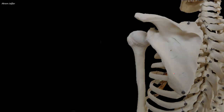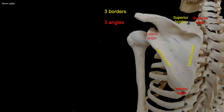The scapula has three borders — medial, lateral, and superior — and three angles: superior, inferior, and lateral. When the scapular body is in the anatomical position, as shown here, the thin medial border of the scapula runs parallel and approximately 5 cm lateral to the spinous processes of thoracic vertebrae.